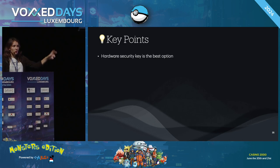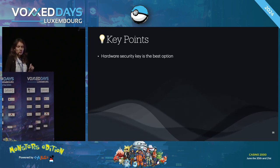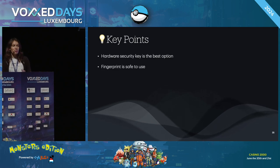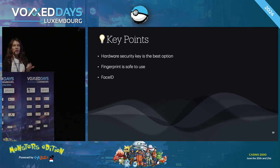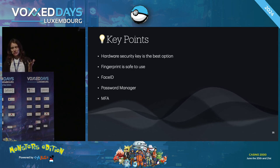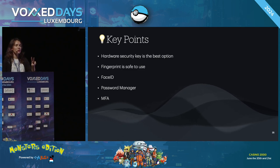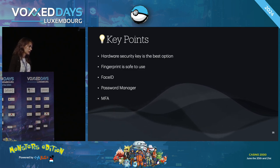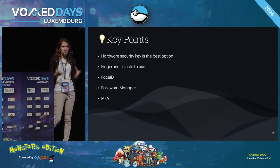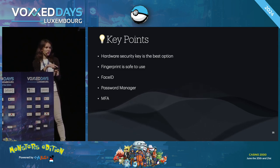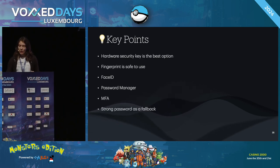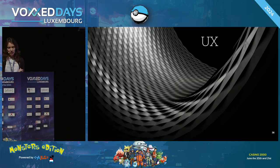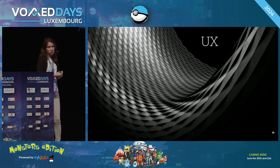Key points: use a hardware security key — the brand doesn't matter much, choose what you like. Fingerprint is the next best option if you don't want to buy a device. Then comes Face ID. Use password managers and multi-factor authentication. For high-value accounts, you can require multiple devices for large transactions. Always use a strong password as a fallback.